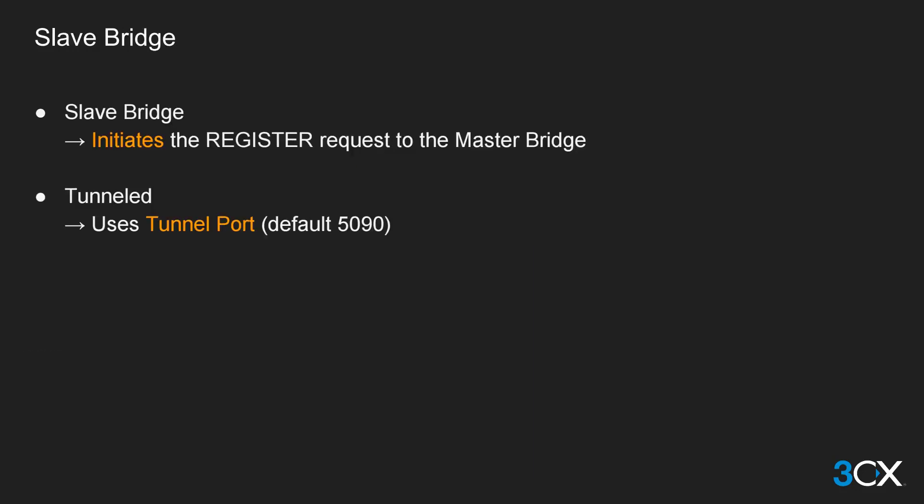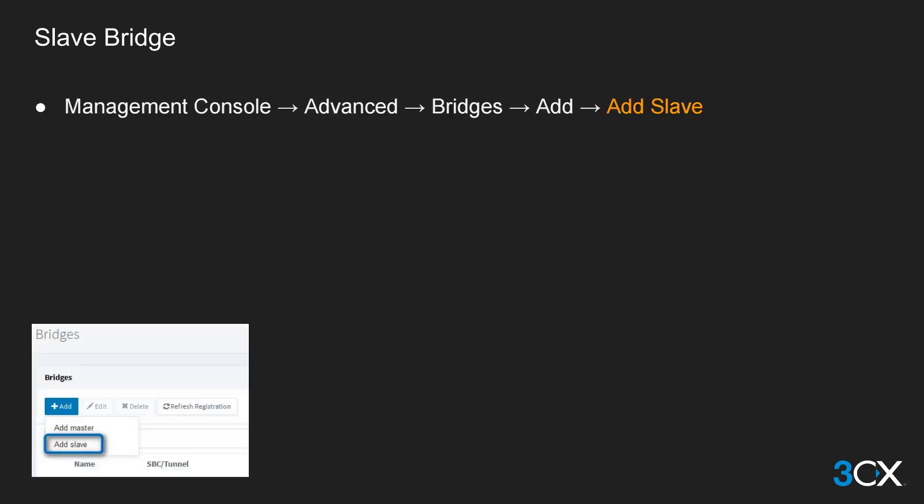The slave bridge PBX will be the PBX which initiates the registration attempts to the master bridge PBX. When the connection is tunneled it will use the tunnel port, which by default is 5090, to pass traffic to the master bridge PBX. The creation of a slave bridge PBX is very simple — when you click on add, choose add slave.